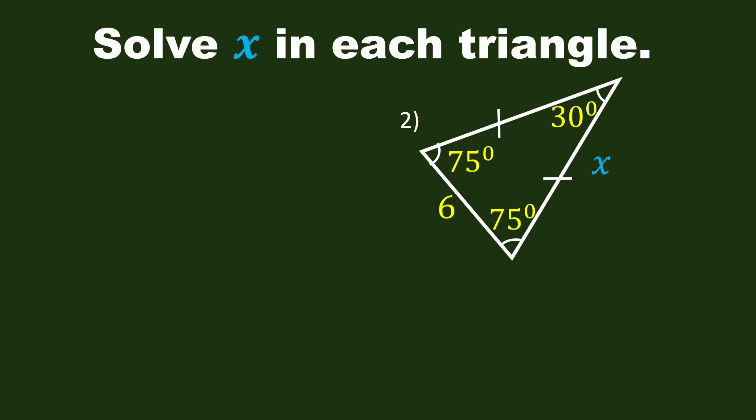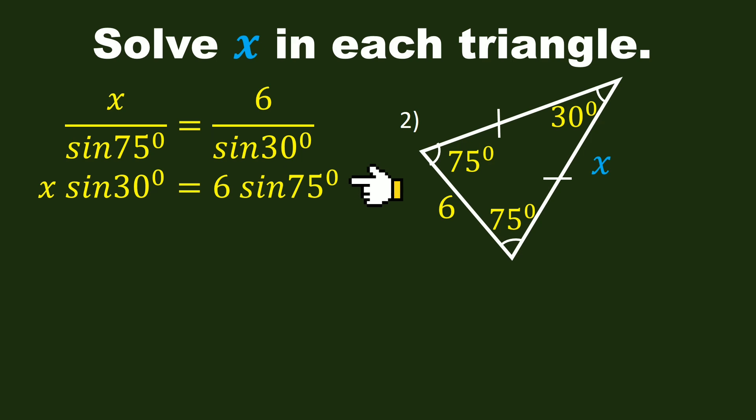So we can find X using law of sines. We have X over sine 75 degrees is equal to 6 over sine 30 degrees. By cross-multiplying, we have X sine 30 degrees is equal to 6 sine 75 degrees. Sine 30 degrees is 0.5, and sine 75 degrees is 0.9659.